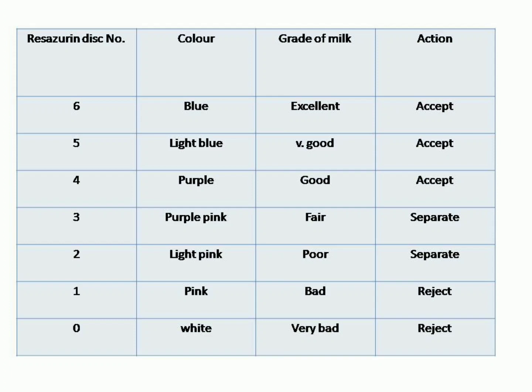Disk 5 = light blue, grade Very Good — Accept. Disk 4 = purple, grade Good — Accept. Disk 3 = purple-pink, grade Fair — Separate. Disk 2 = light pink, grade Poor — Separate. Disk 1 = pink, grade Bad — Reject. Disk 0 = white, grade Very Bad — Reject.